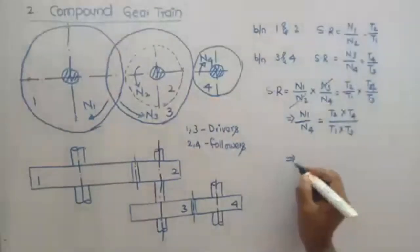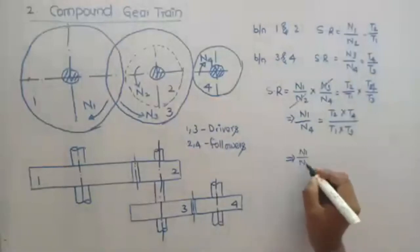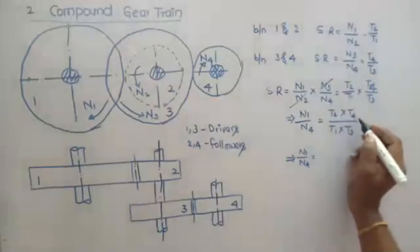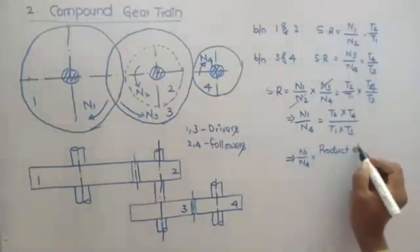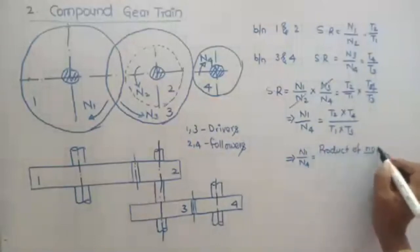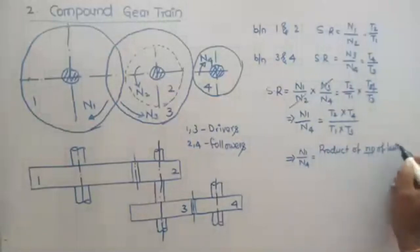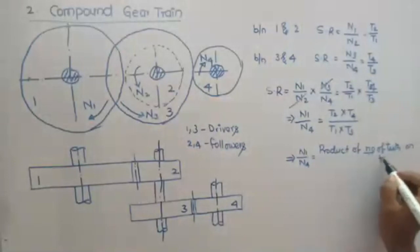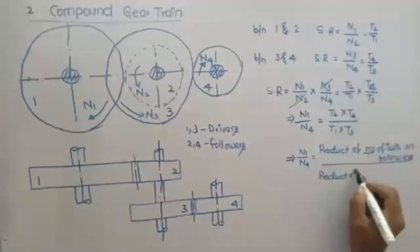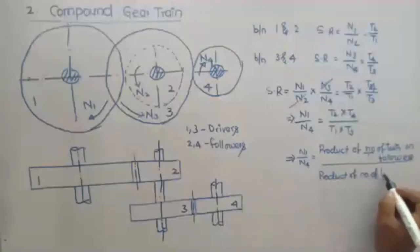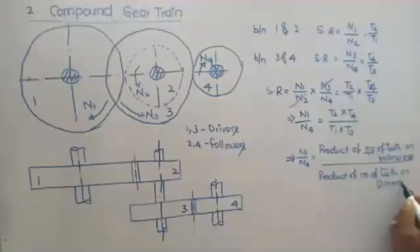So the speed ratio n1 by n4 equals the product of the number of teeth on followers — gears 2 and 4 — divided by the product of the number of teeth on drivers — gears 1 and 3. That is how the speed ratio can be expressed for a compound gear train.